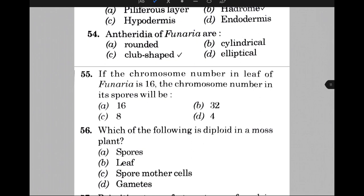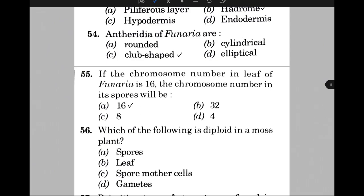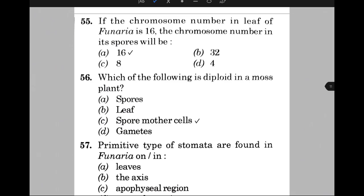If the chromosome number in the leaf of Funaria is 16, the chromosome number in its spores will be — the answer is A, that is 16. Which of the following is diploid in a moss plant? The answer is C, that is spore mother cells. Primitive type of stomata are found in Funaria on — the answer is C, that is the apophysis region.